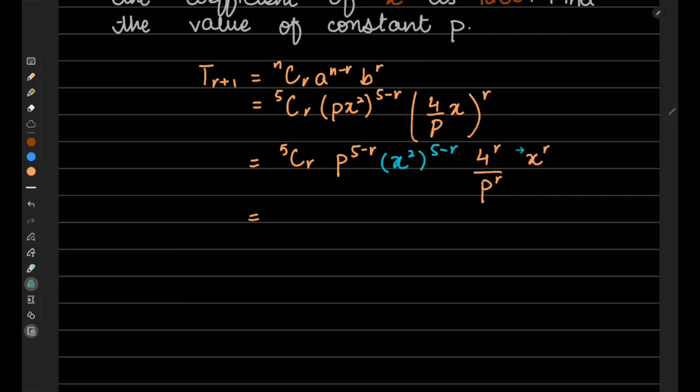x² to the power (5-r), this is x and this is x. So we are focused to combine all the x powers to make one whole. Just write the rest of it as it is: p^(5-r). Also this is r, so we can just combine the p powers also. We can also write minus r for this. Then 4^r and x to the power 2(5-r) + r.